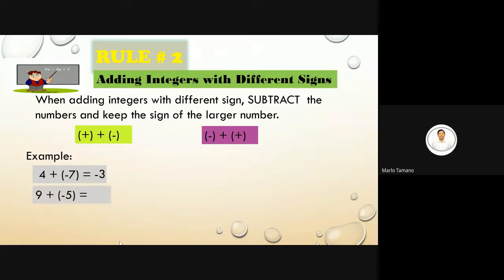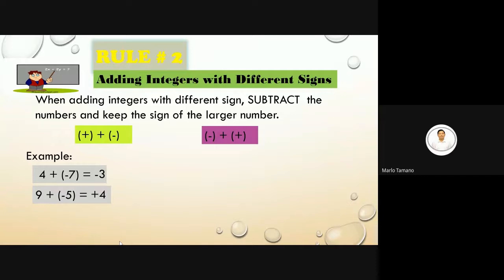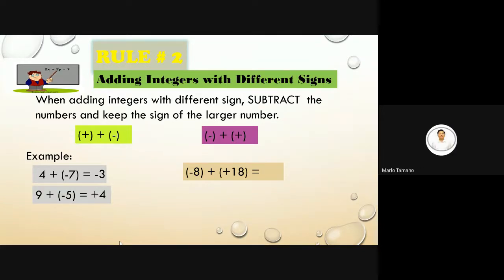Nine plus negative five: the answer is positive 4 because 9 has a greater absolute value. Negative eight plus positive eighteen: the answer is positive 10.